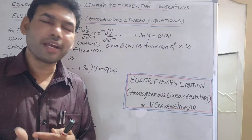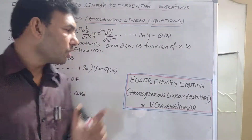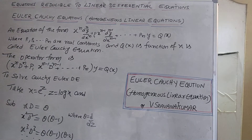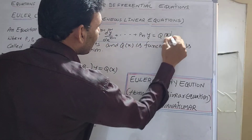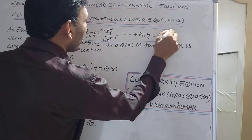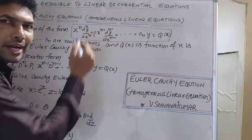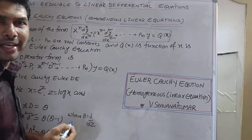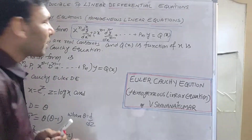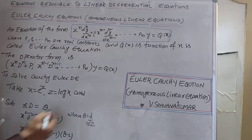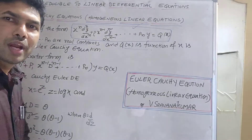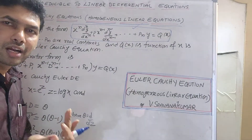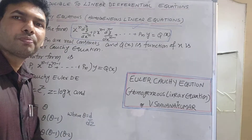The linear differential equation formula is the Euler-Cauchy equation. An equation of the form: x^n * d^n(y)/dx^n + p1 * x^(n-1) * d^(n-1)(y)/dx^(n-1) + ... + pn * y = q(x), where p1, p2, ..., pn are real constants and q(x) is a function of x. We call this type of equation a Cauchy-Euler equation, or Euler-Cauchy equation, or homogeneous linear equation.